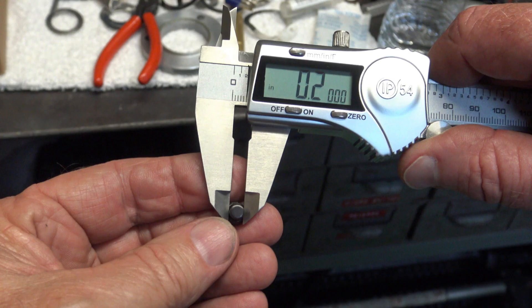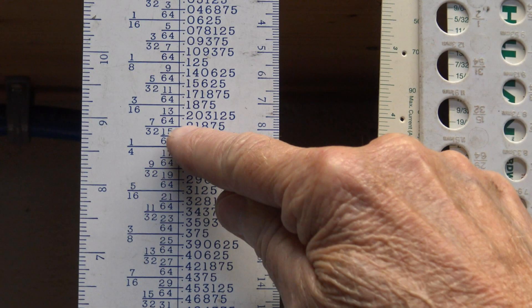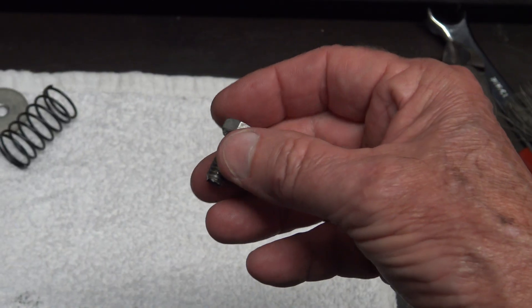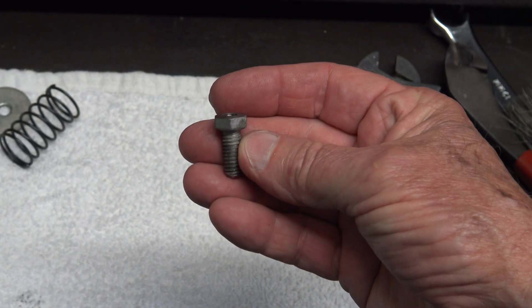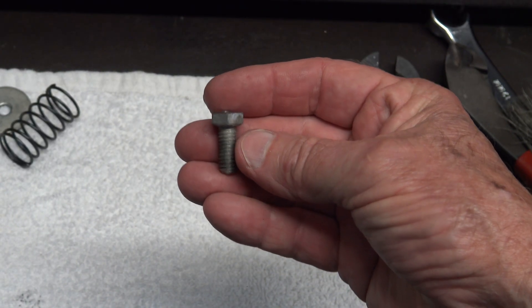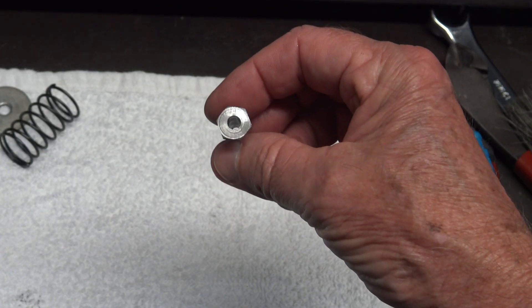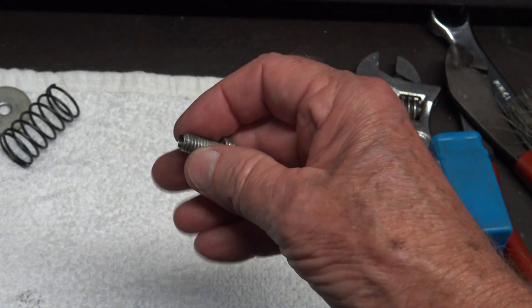The tip on the set screw is about 200 thousandths in diameter. So I'm going to use a 13/64 drill bit. I'm making a drill guide out of a 5/16-18 bolt. So I'll drill the center out with a 13/64 drill bit.